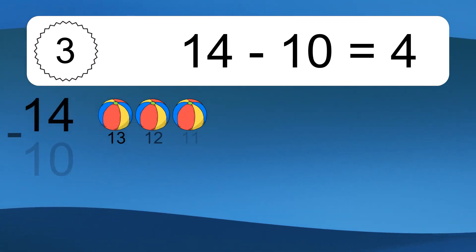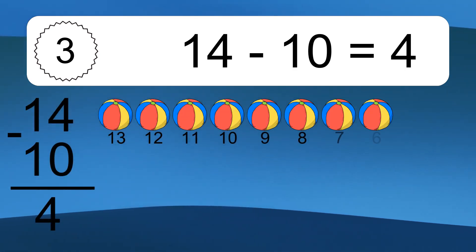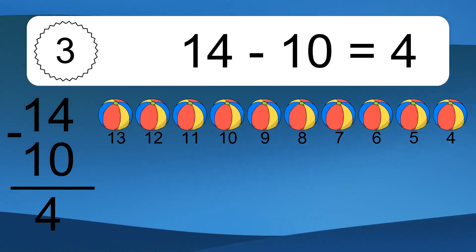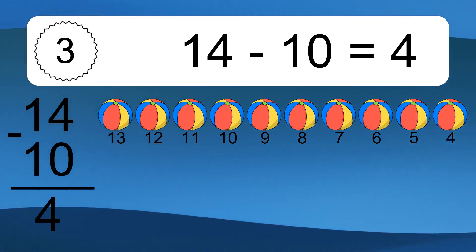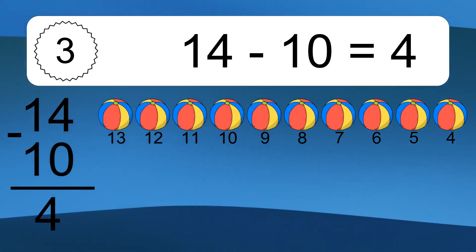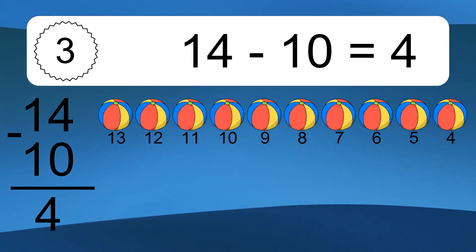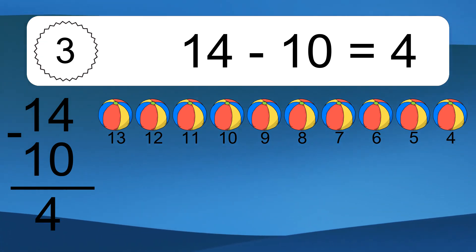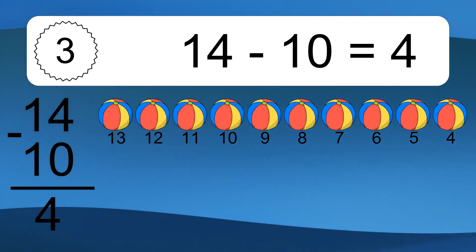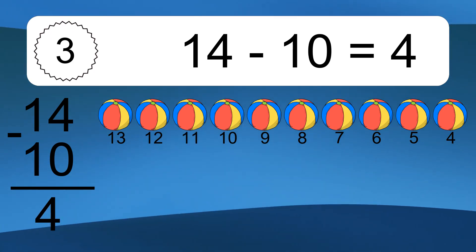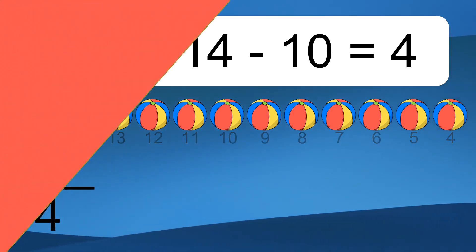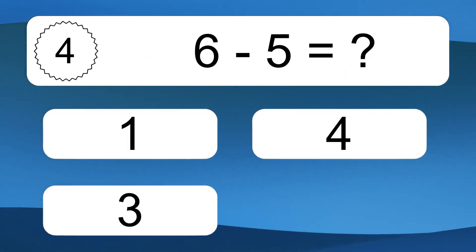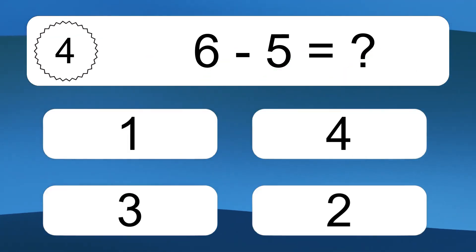14 minus 10 equals 4. Let's count it: 13, 12, 11, 10, 9, 8, 7, 6, 5, 4. 6 minus 5 equals what?